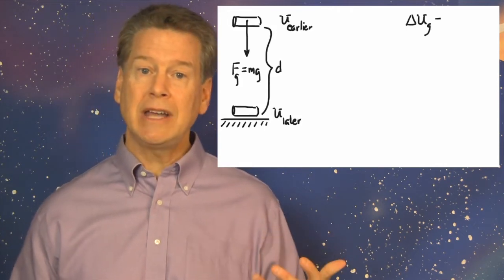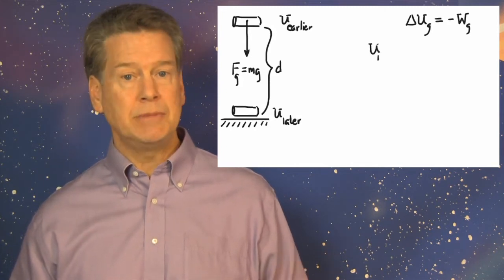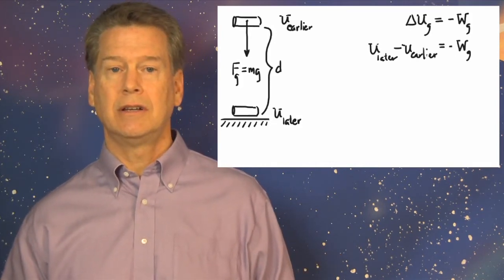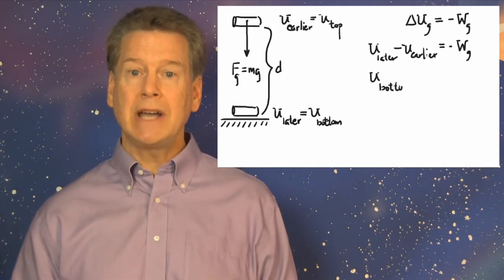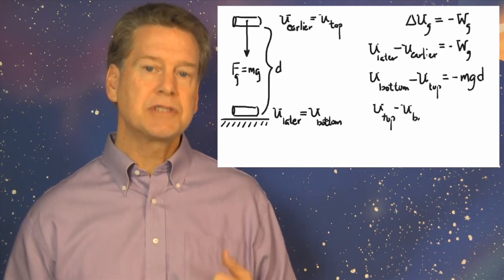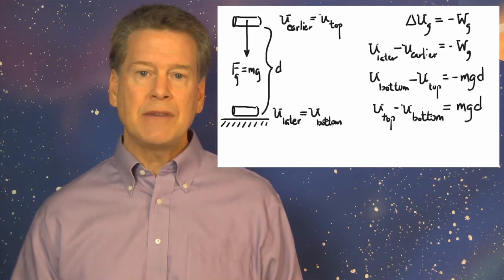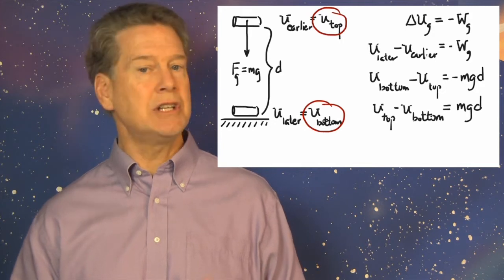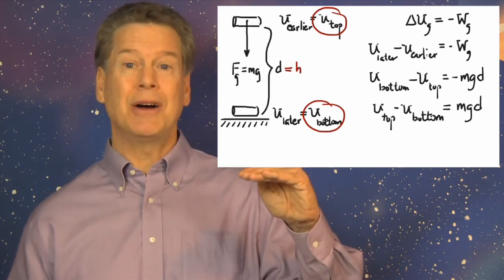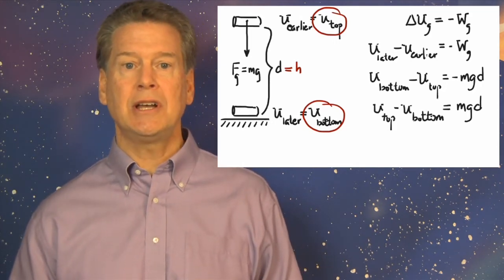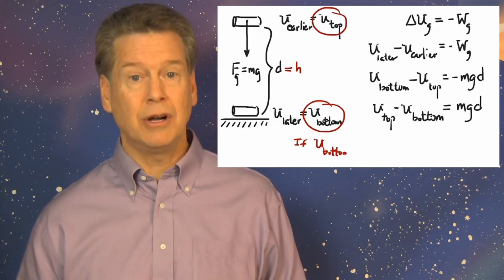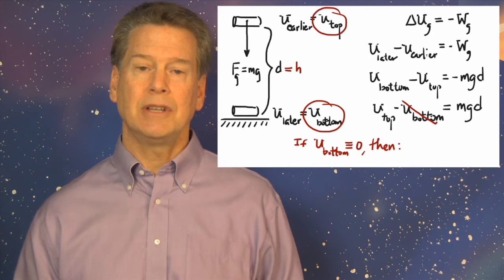Delta U sub G equals minus W sub G. Remember what the delta means: U sub later minus U sub earlier equals minus W sub G. That is, U at the bottom minus U at the top equals minus M times G times D. Let's rearrange this: U at the top minus U at the bottom equals MGD. This says that the gravitational potential energy at the top minus the gravitational potential energy at the bottom equals MGD. But if we recognize that this distance D is just the height H above the ground, then U at the bottom is the potential energy of the object when it can't fall any farther. So if we define U at the bottom to be the local zero of potential energy,